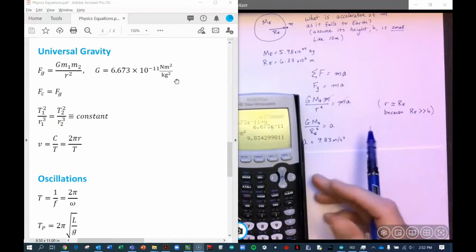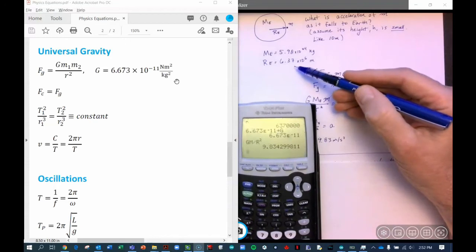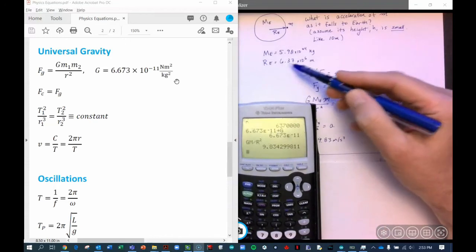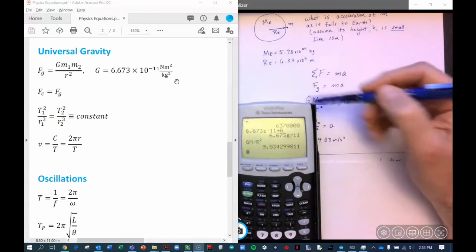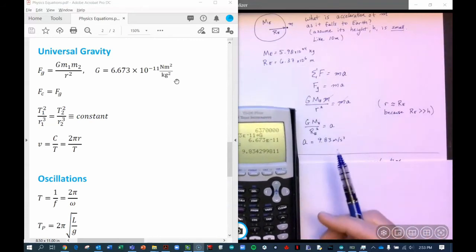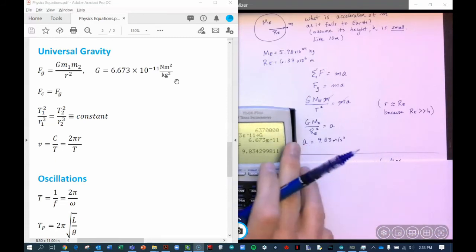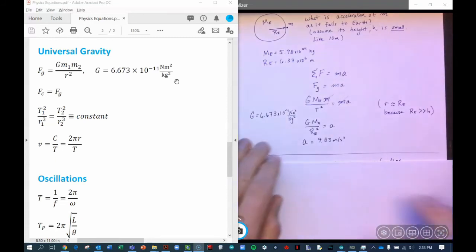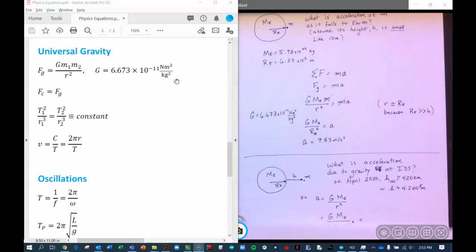This radius that we're using here is the mean radius, is the average radius of the Earth. And that's not exactly what the radius is here in Newtown where we are, but it's close enough. So let's continue with another example. And let's see what happens if the acceleration of gravity, what does the acceleration of gravity do, or at the position of the International Space Station, here in April 2020.